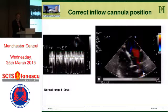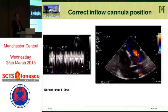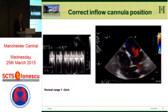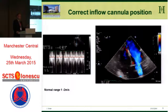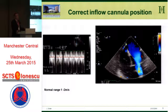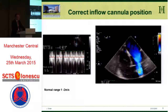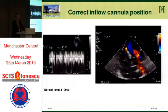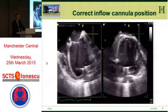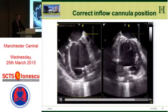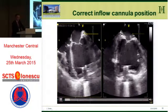Normal parameters for both the inflow and outflow cannula are around 1 to 2 meters per second. Any acceleration of flow means there is either thrombotic material in the system or the inflow cannula is kinked. Flow in the normal range between 1 and 2 meters per second is a normal finding. An optimal position is when the opening is directed toward the mitral valve so that the inflow is without any disturbance.